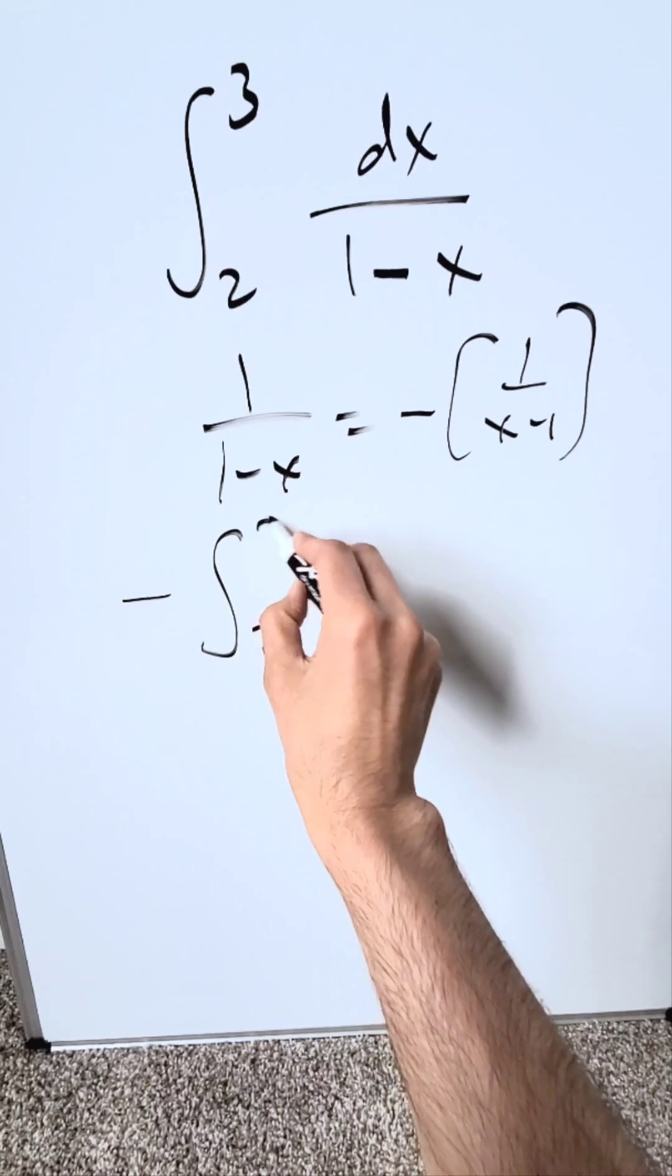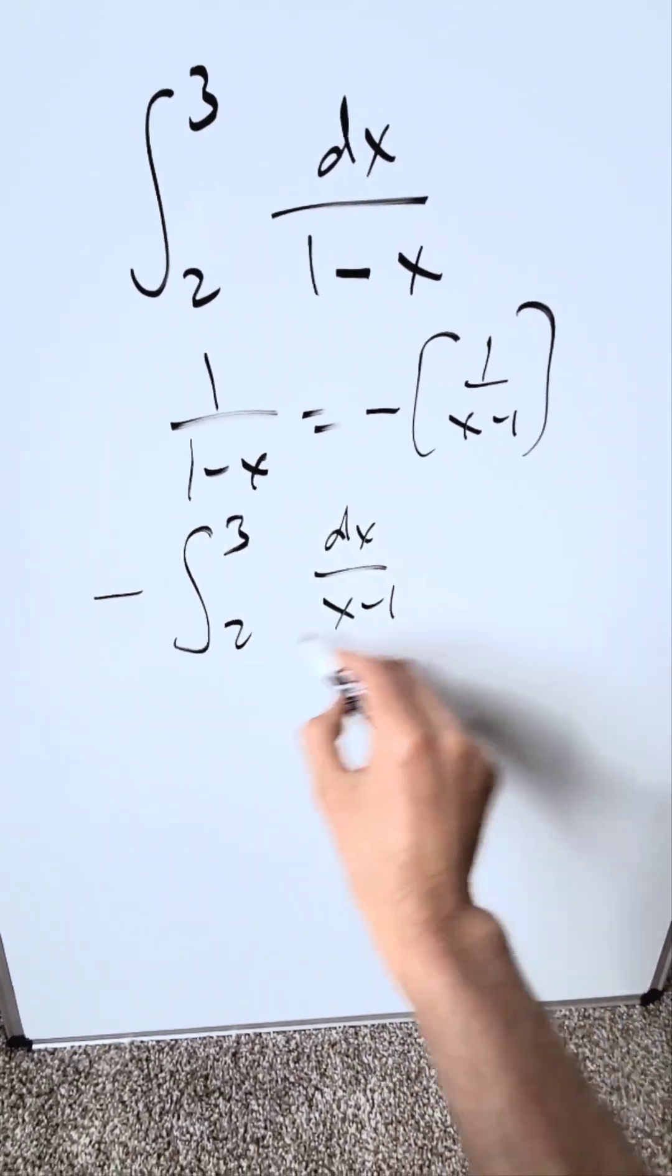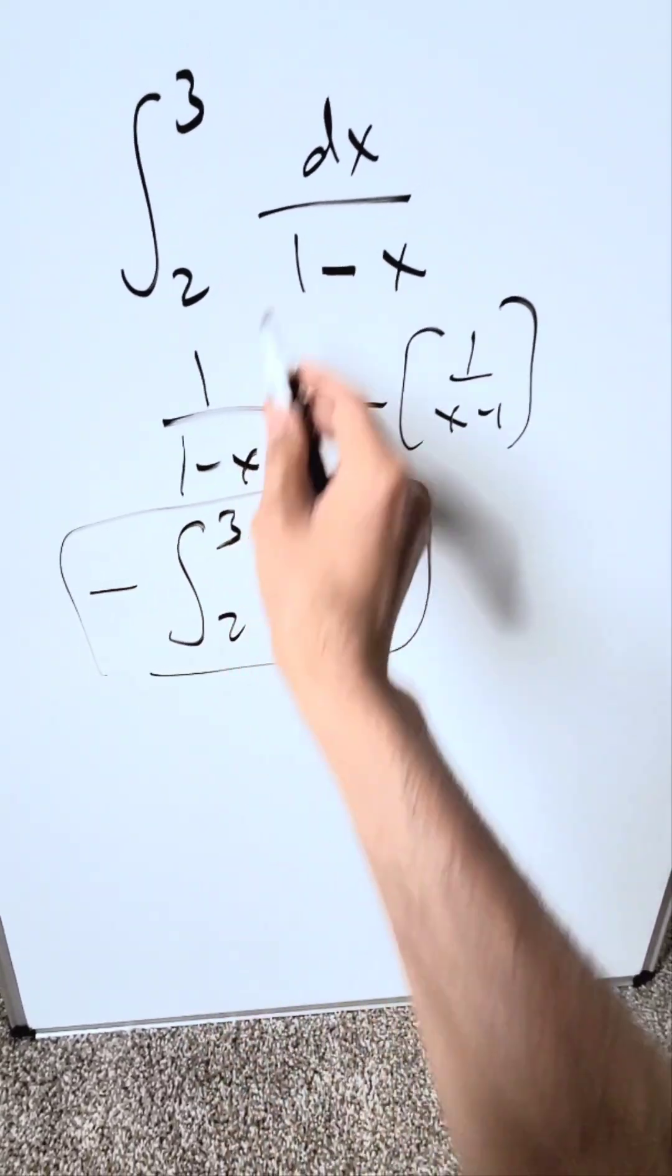Now I'm looking at a 2 and a 3. I have a dx over x minus 1, and this is what I will evaluate. It's equivalent to what you see here.